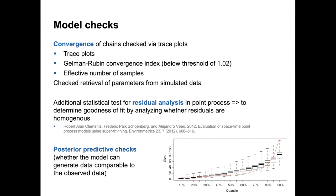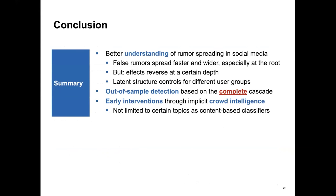We ran statistical tests for residual analysis to confirm that our point process models the data adequately. The last step was posterior predictive checks: after fitting the models, we sampled from them to generate new cascades and compared different summary statistics of the generated cascades against the actually observed ones. The generated cascades produced believable results matching the real dataset, giving us good confirmation that the model fits the data rather well.